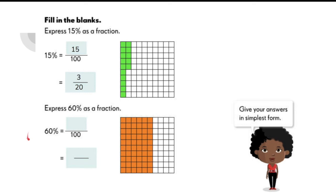Let's try another example. 60% is equal to 60 over 100. In lowest term, it's 3 fifths.